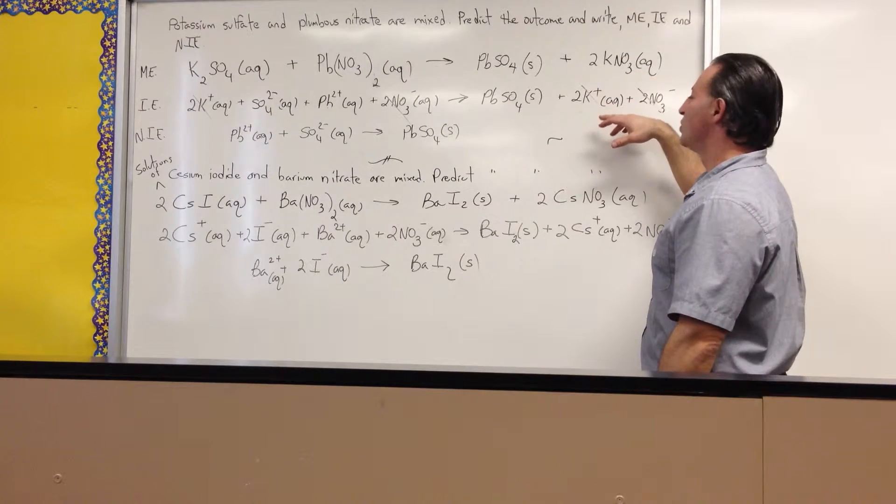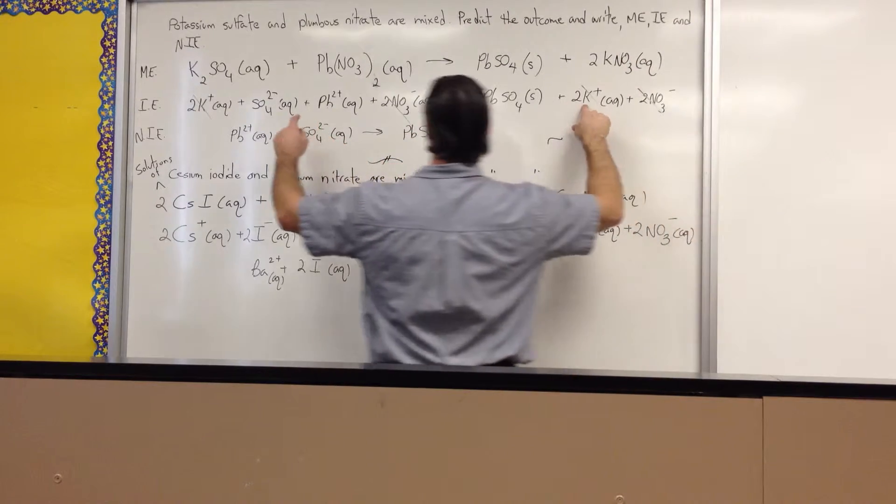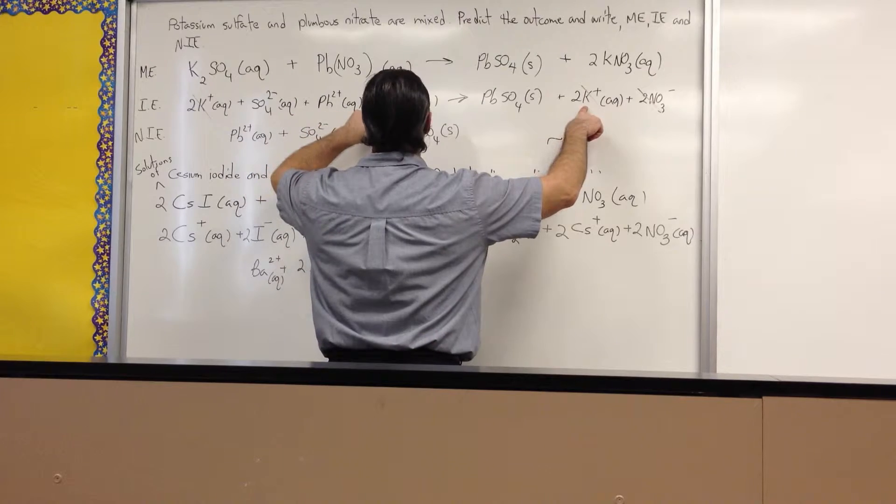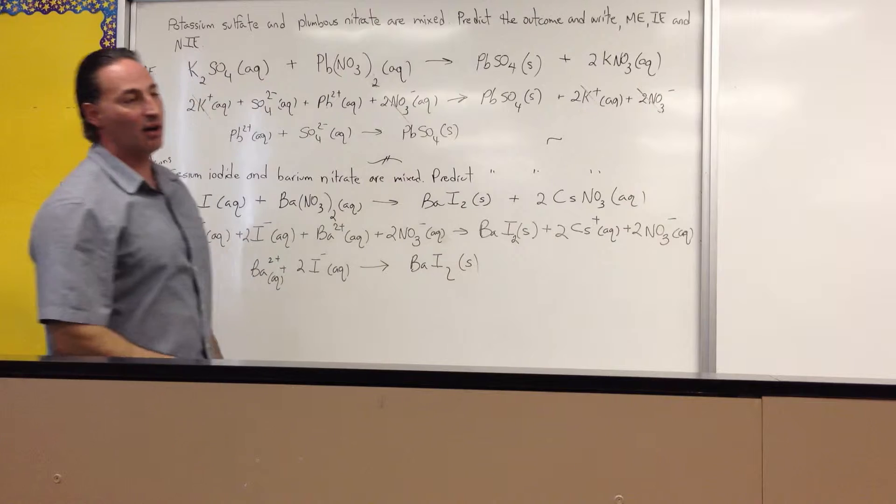In the next equation, we cross out everything that appears on both sides of the equation. So, you see potassium here, and we see potassium there. We see nitrate on this side, and we see nitrate on that side. So, they're spectator ions.